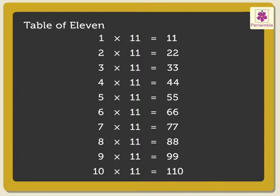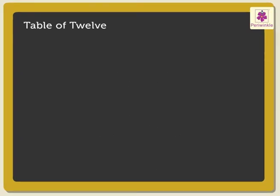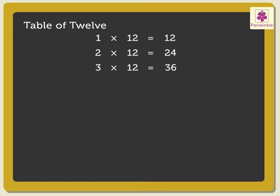Next is the table of 12: 1 × 12 is 12, 2 × 12 are 24, 3 × 12 are 36, 4 × 12 are 48.